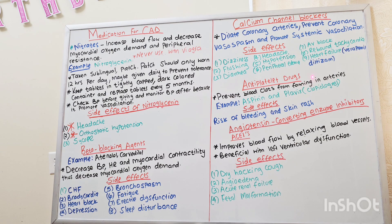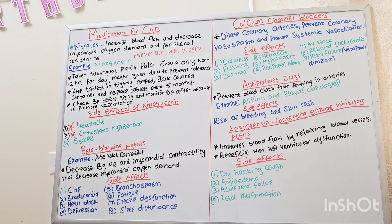Now let's discuss another class of medication, which is anti-platelet drugs. They can be used with anticoagulants after surgery, such as stent placement or after a CABG. This prevents blood clots from forming in arteries. Examples are aspirin and Plavix. Side effects include a risk of bleeding and skin rash.